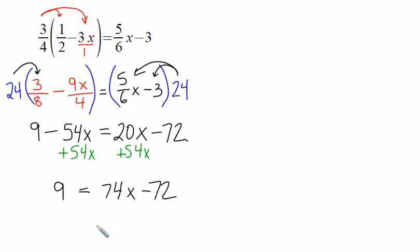We will then add the 72 to both sides. 9 plus 72, either do that mentally, which hopefully isn't that bad, or have your calculator along to help. We'll get 81 is equal to, on the right-hand side, we have 74x.